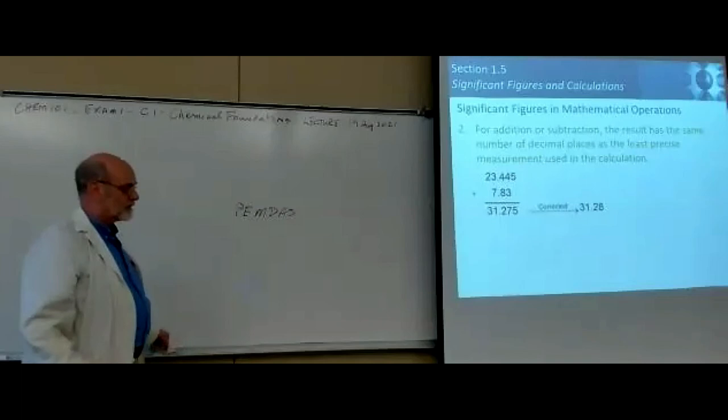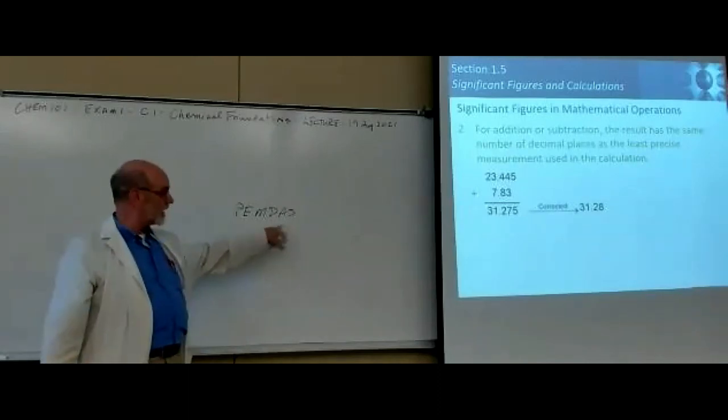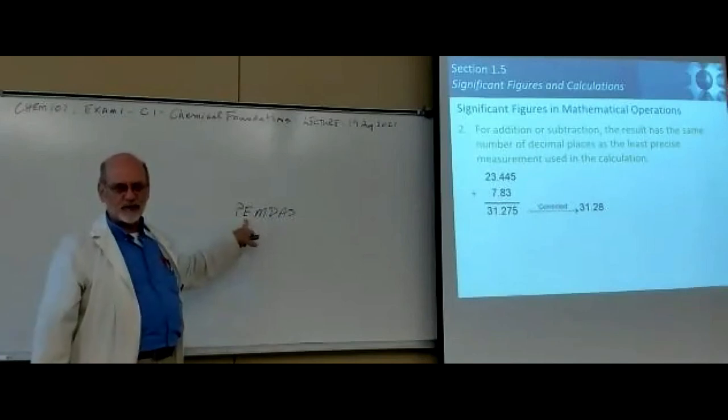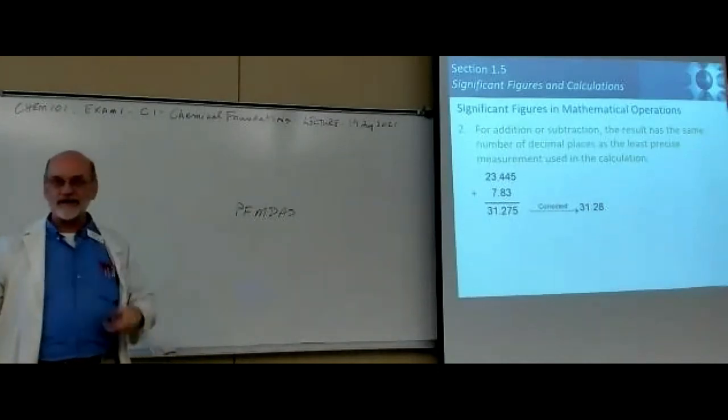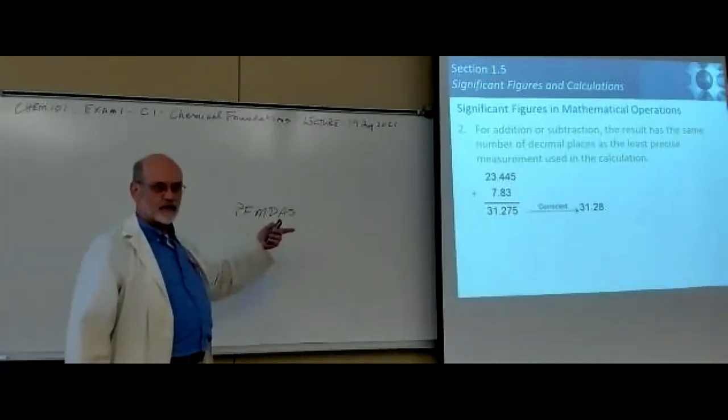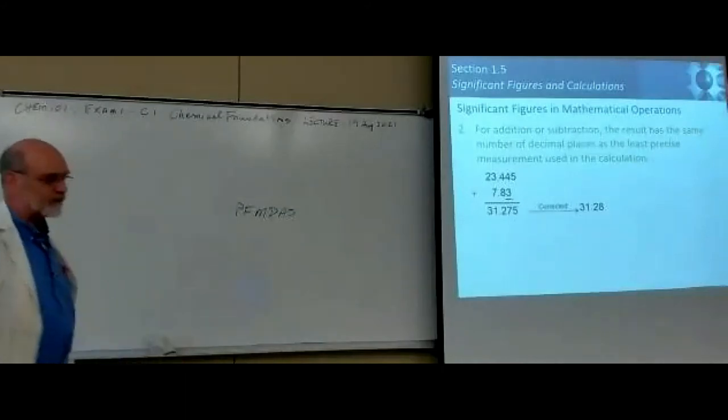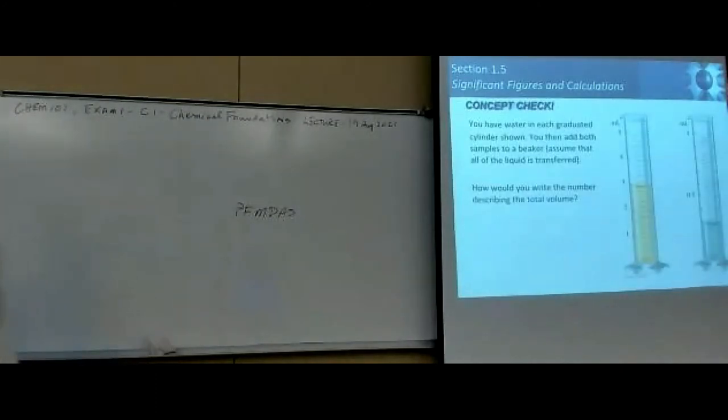If you've got addition and subtraction in there, it's going to come last if it doesn't tell you what to do. So you do all your multiply, divide, and exponent fits in with this rule, and then you do add subtract at the end. So in that case it probably would take at least two steps to do a complex calculation like that and get the correct number of significant figures.